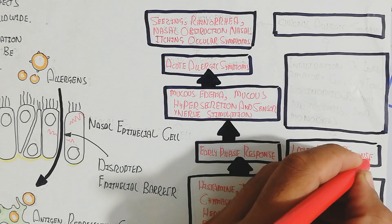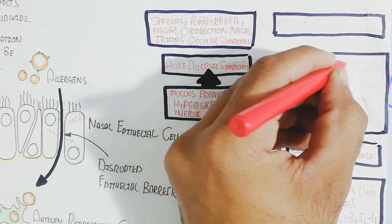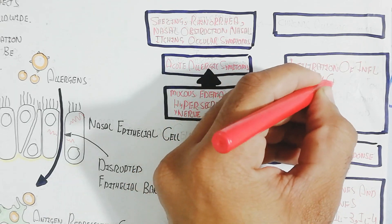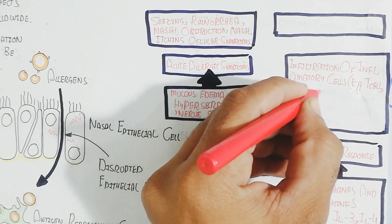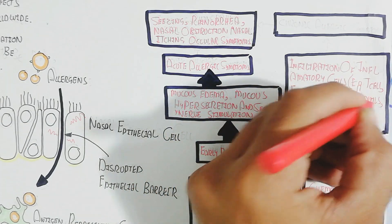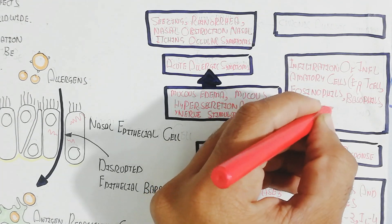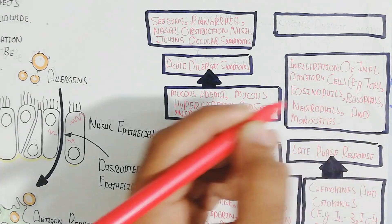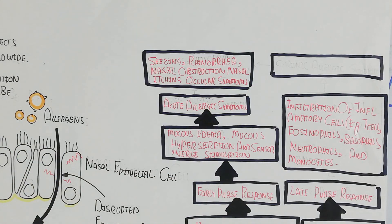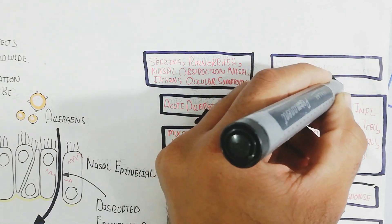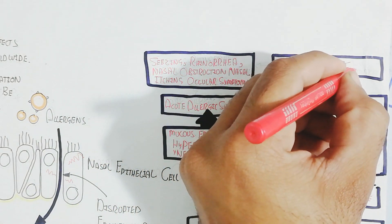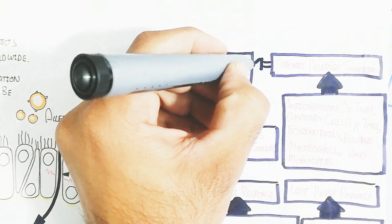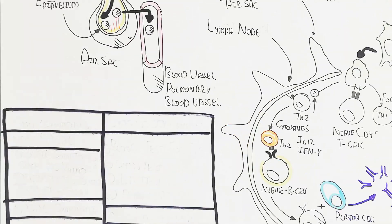The late-phase response involves infiltration of inflammatory cells including T cells, eosinophils, basophils, neutrophils, and monocytes, which trigger chronic allergic symptoms. This results in ongoing nasal mucus secretion and a range of complications. This represents the overview of the immune response mechanism in allergic rhinitis.